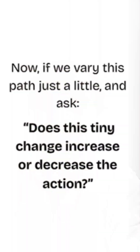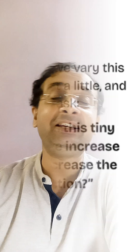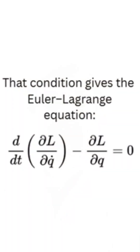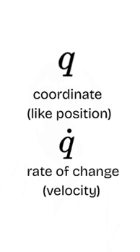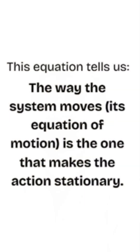Does a tiny change increase or decrease the path? The condition of the real path is that it does not — it is always stationary. This condition is given by the Euler-Lagrange equation, where q is the coordinate like the position and q-dot is the rate of change of velocity. This equation tells us that the system's equation of motion is the one that makes the action stationary.